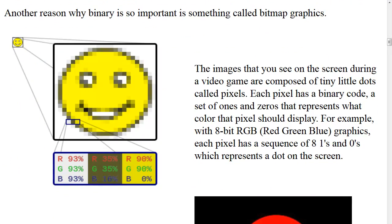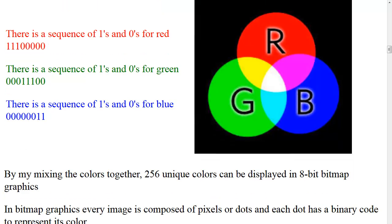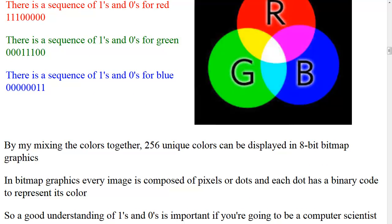Another reason why binary is so important is something called bitmap graphics. The images you see on the screen during a video game are composed of tiny dots called pixels. Each pixel has a binary code — a set of ones and zeros that represents what color that pixel should display. For example, with 8-bit RGB graphics, each pixel has a sequence of eight ones and zeros. There's a sequence for red starting with three ones, for green with three ones in the middle, and for blue with two ones at the end. By mixing colors together, 256 unique colors can be displayed in 8-bit bitmap graphics.